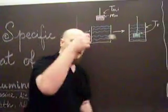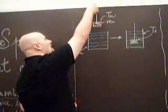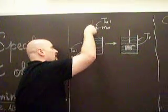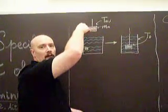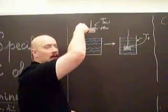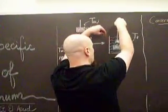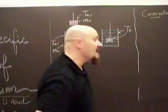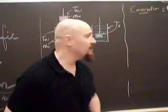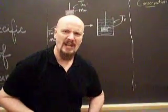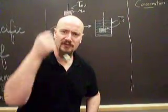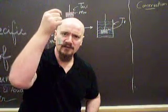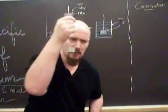We're going to take an aluminum cube and dunk it in some water. We're going to stir it until it reaches a final equilibrium temperature, and from that data, we can determine the specific heat of this aluminum cube for that temperature range.